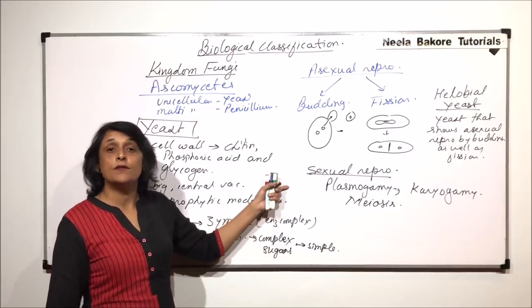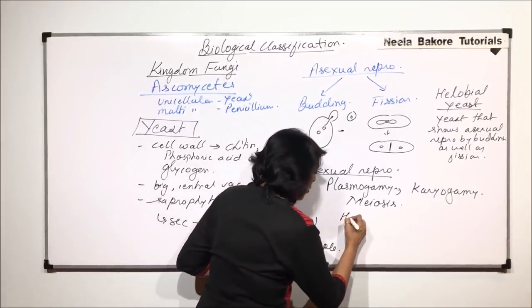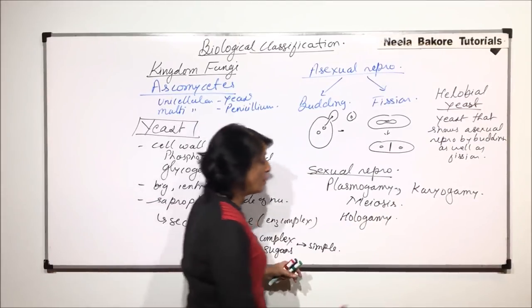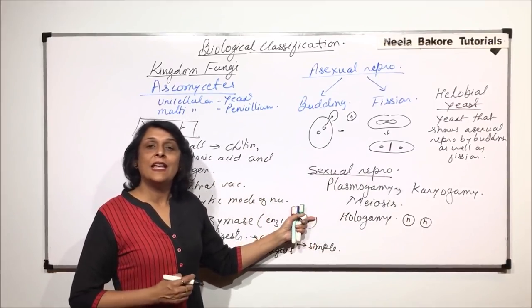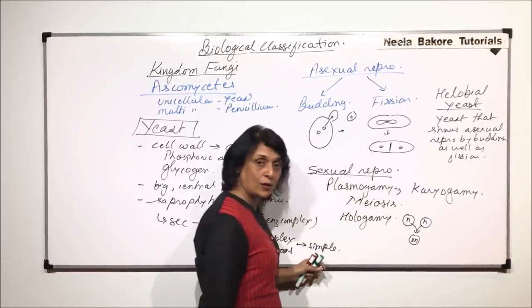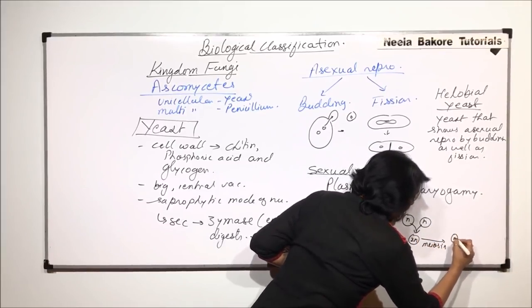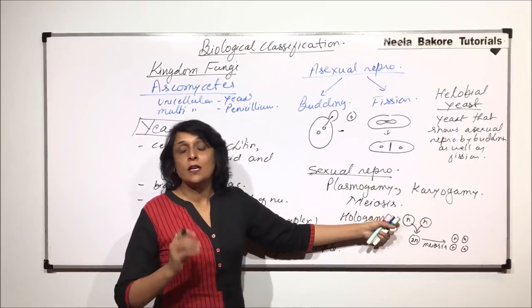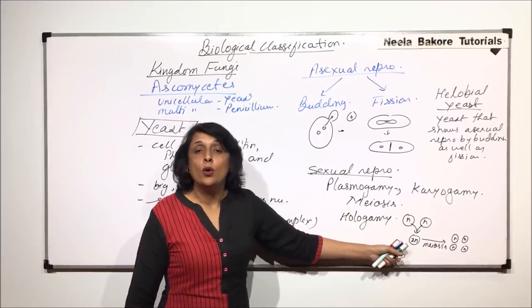So, all three steps are seen in case of sexual reproduction. In yeast, sexual reproduction can be by hologamy. This is seen when the cells are haploid. That means these two haploid cells which are leading their normal life, they start behaving like gametes and then they fuse to form a diploid zygote. And this zygote undergoes meiosis to form haploid cells which would start leading their life.